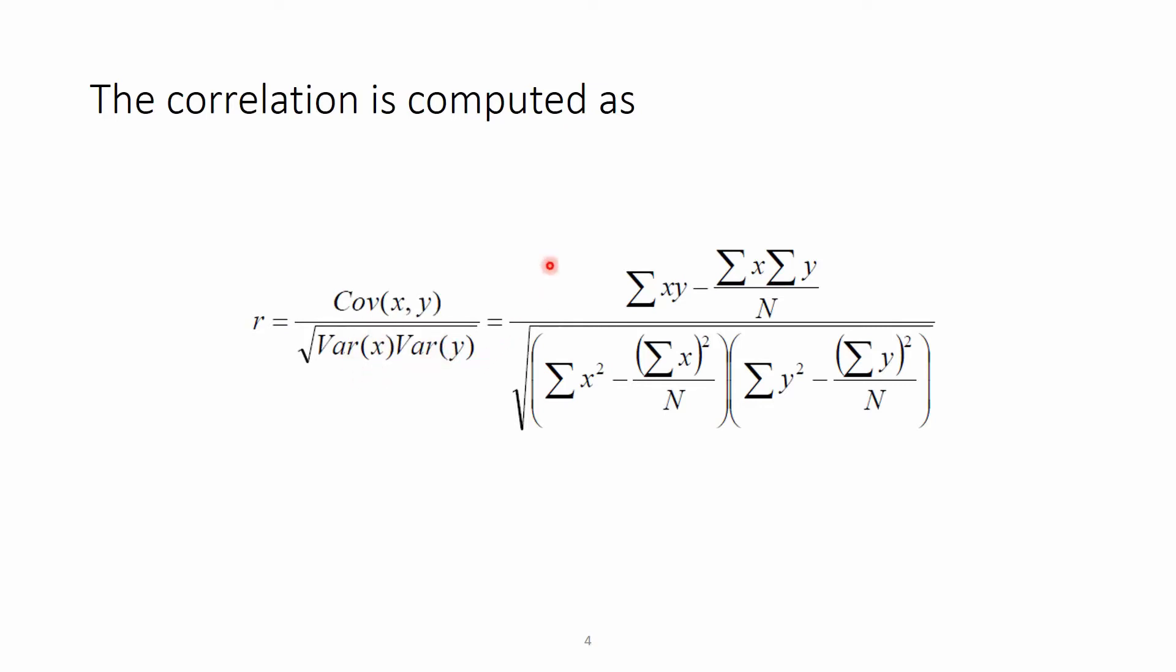The correlation coefficient is computed as a covariance between x and y divided by the square root of variance x and variance y. If we want to write out this one in further detail, we have the covariance between x and y and the variance of x and the variance of y in these brackets. Basically, the goal of this video is to provide you with the link between this equation and the R-square equation to compute the linkage disequilibrium.